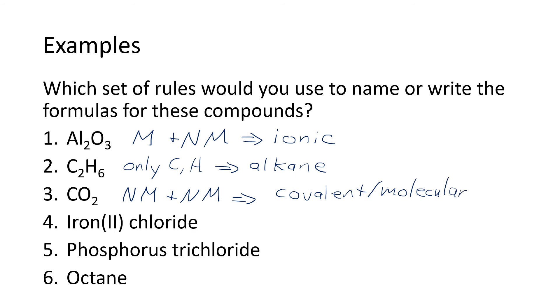So sometimes I'll refer to this as covalent, sometimes I'll call it molecular. For number four, we have iron to chloride. Iron is a metal and chloride is a nonmetal. So a metal plus a nonmetal tells us that we have an ionic compound.